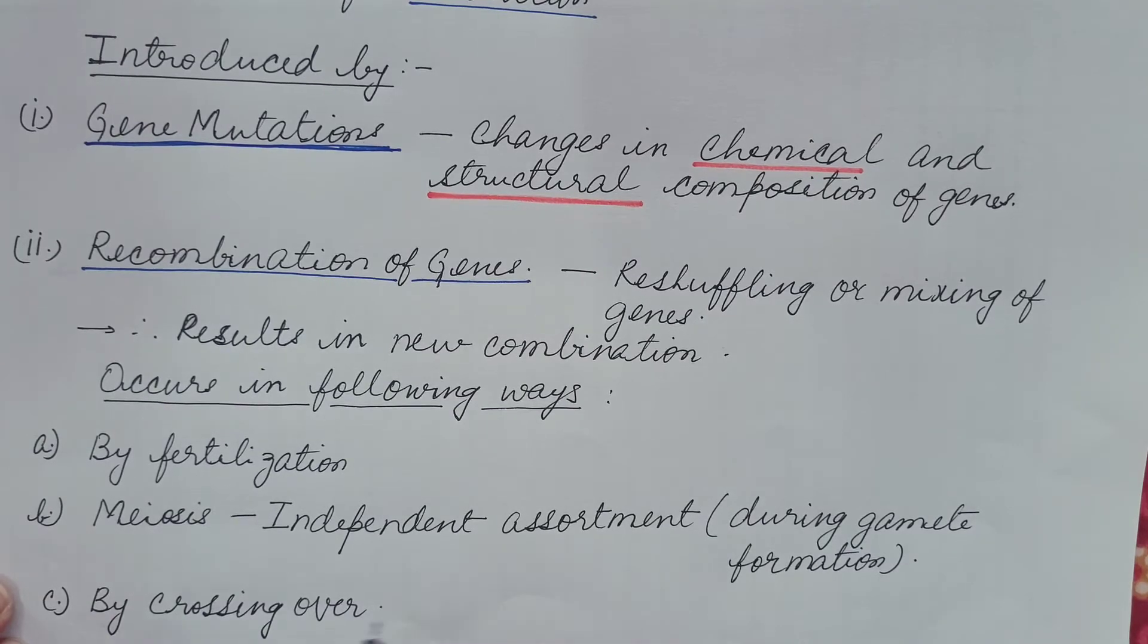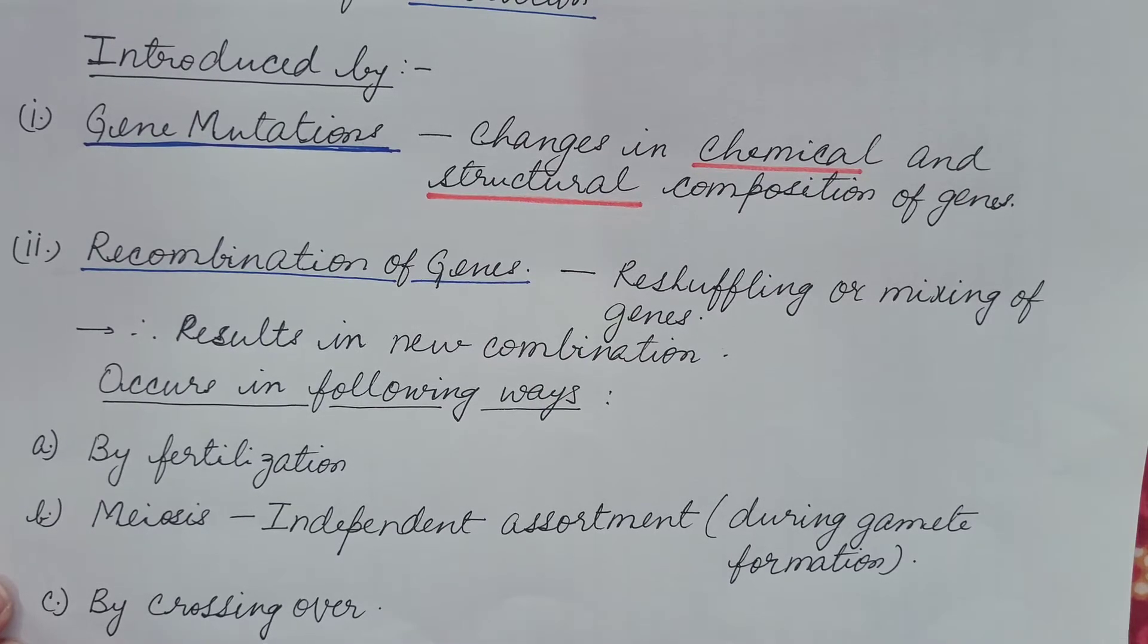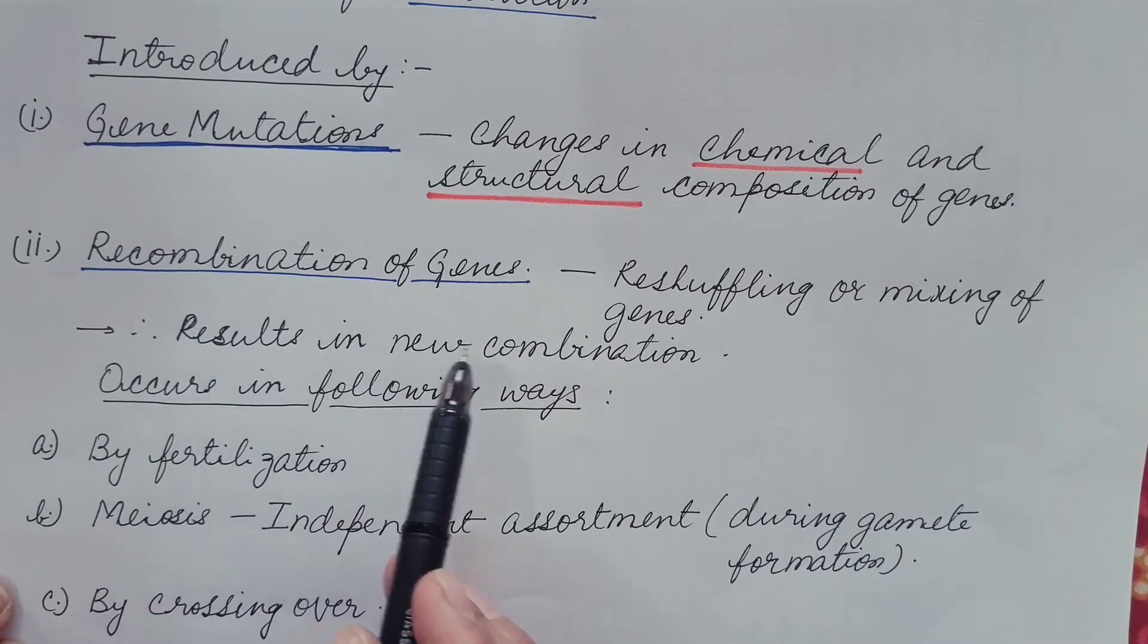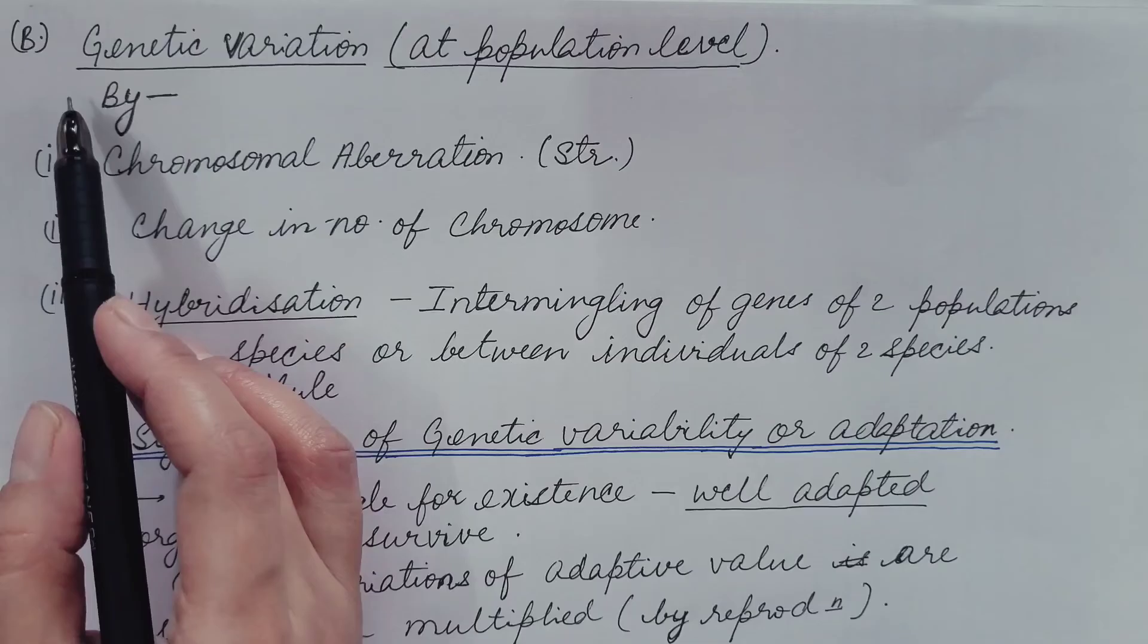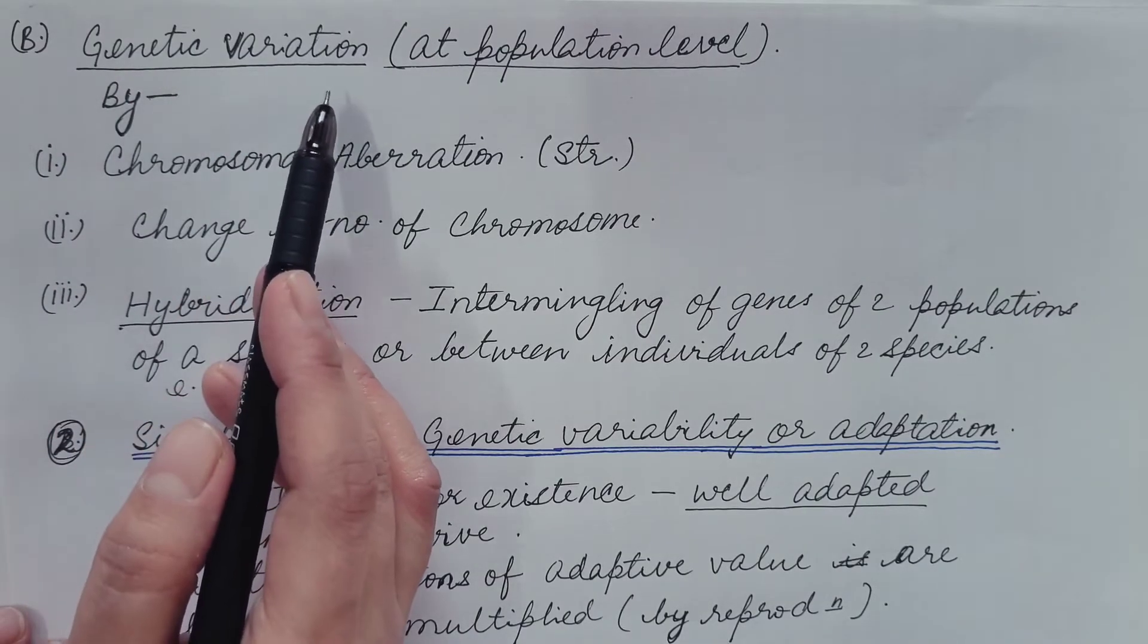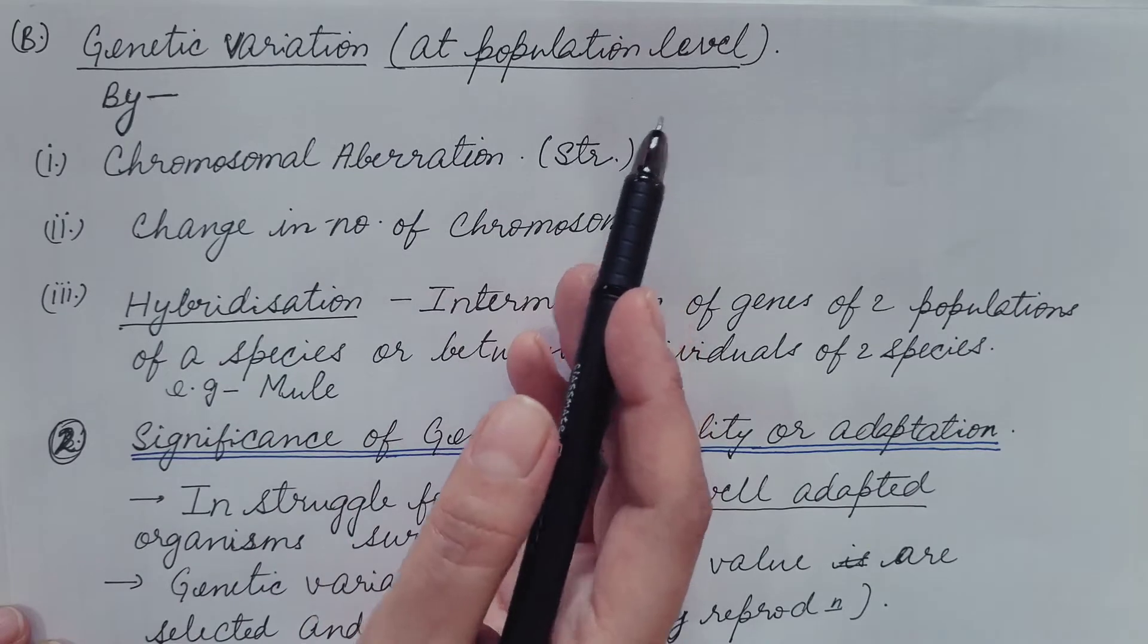By crossing over. It is the exchange of part between non-sister chromatids of homologous chromosomes. It occurs in the pachytene stage of meiosis and this also results in the new combination or recombination of the genes. We have already discussed crossing over in meiosis topic. Now let us see the cause of genetic variation at the level of population.